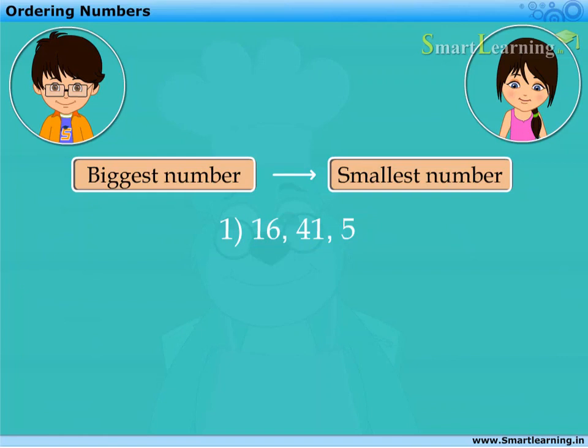The biggest number from these numbers is 41. While the smallest number is 5. Taking the third number, that is 16, in the middle, they can be arranged as 41, 16, 5.